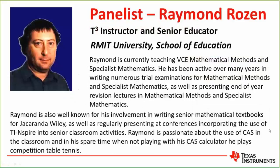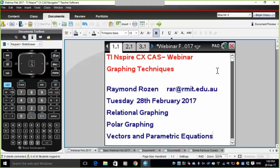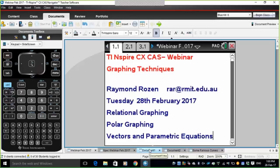Thank you gentlemen for joining us. Ray, I will pass everything over and it's now all yours. Good evening everybody. My name is Raymond Rosen and I teach Specialist Maths and Mathematical Methods at RMIT. Tonight we are going to have a look at some relational graphing, some polar graphing, and some vectors and parametric equation graphing.